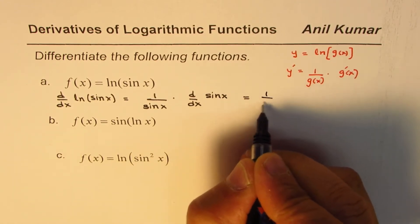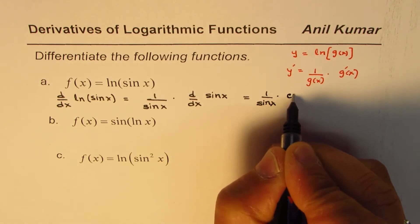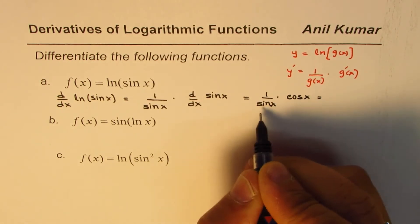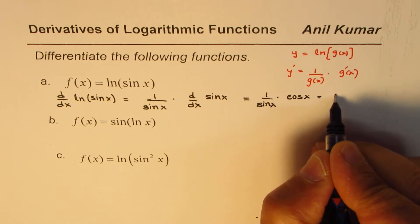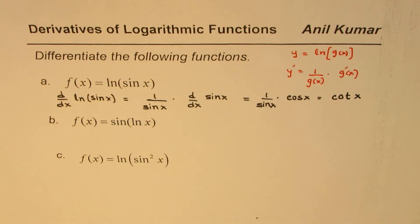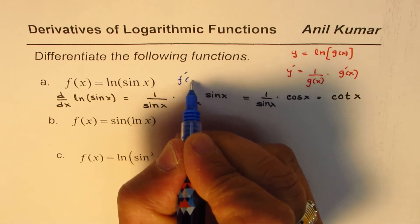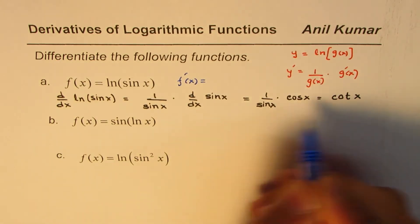So we get 1 over sine x times cos x and cos x over sine x is cotangent x. So the derivative of this function will be equal to cot x. So we can write this as f dash x equals cot x.